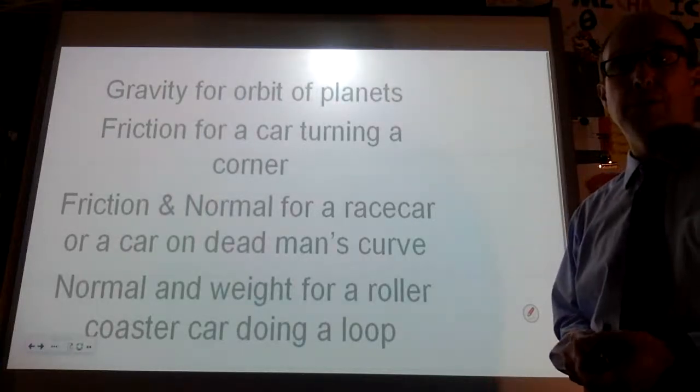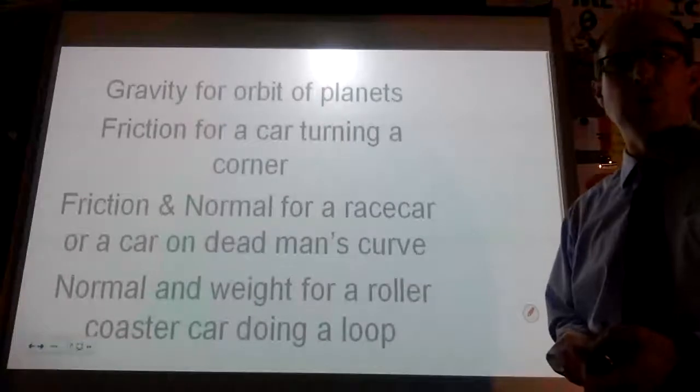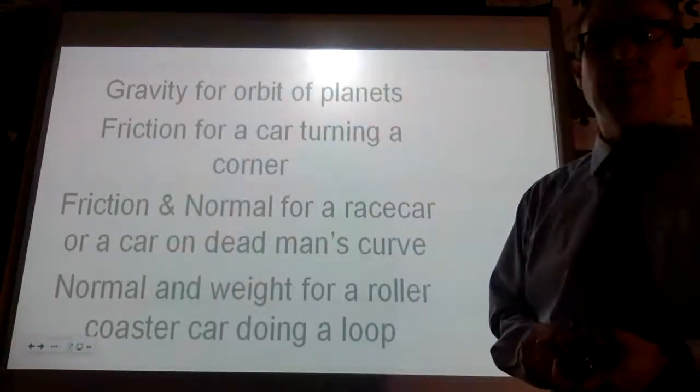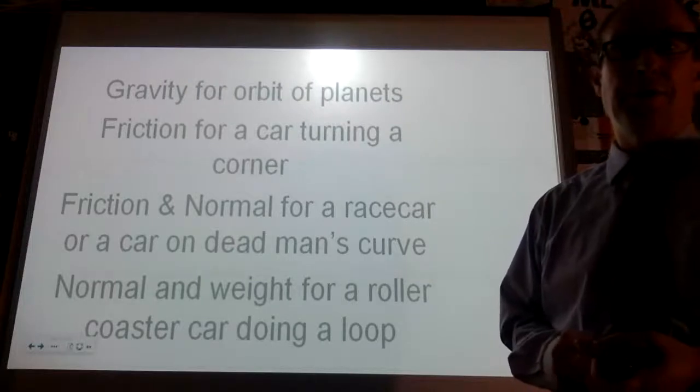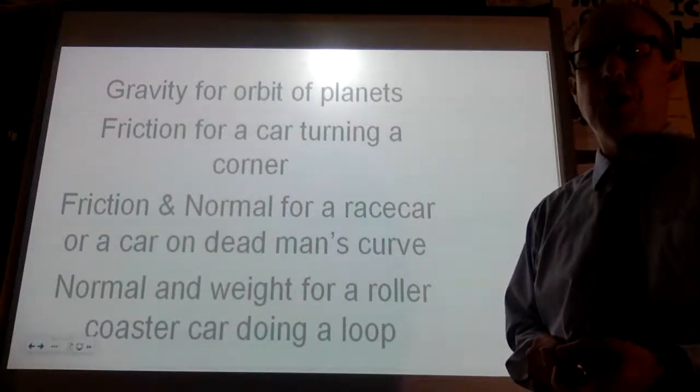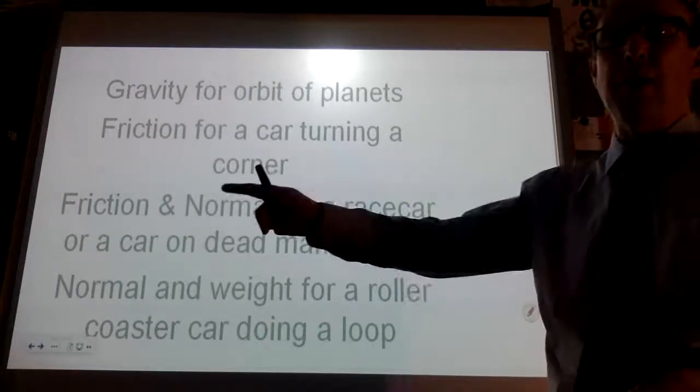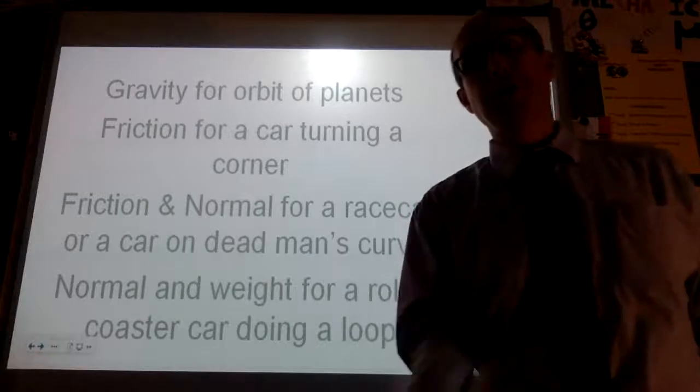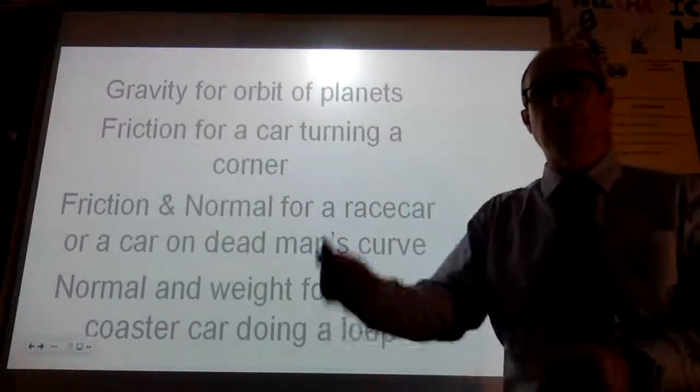...planets in orbit. This is what keeps the moon going around us. This is what keeps satellites going around the earth. This is how your car turns. Your car, when it turns, wants to keep on going in a straight line. The friction of the tires points towards the center of whatever circle you're turning in and turns you.